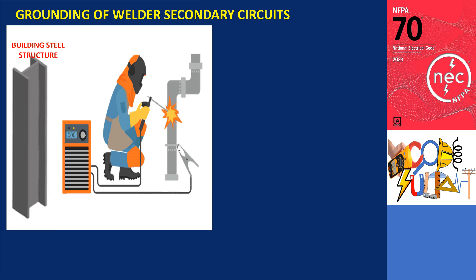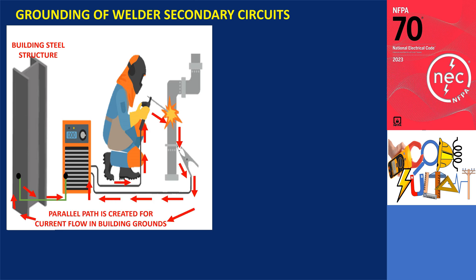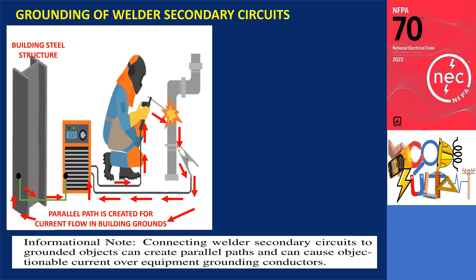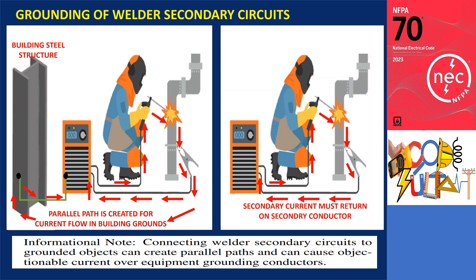Another situation where objectionable currents may arise is when the secondary circuits of a welder are connected to grounded objects. This connection can create parallel paths, resulting in objectionable currents flowing through equipment grounding conductors. This example is mentioned in the informational note of section 630.15, which pertains to the grounding of welder's secondary circuits. It is important to note that separately derived systems are not included in this scenario. To prevent objectionable currents, it is recommended to connect the workpiece terminal of the welder to the workpiece or workpiece table instead of the building's grounding system.